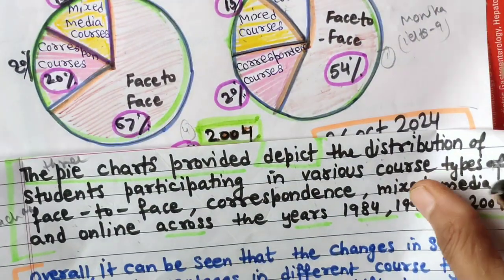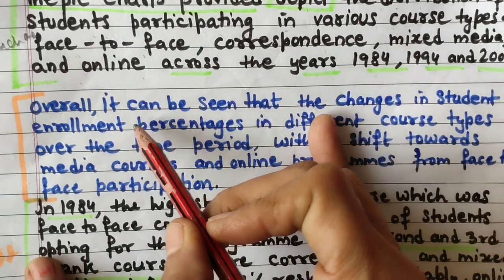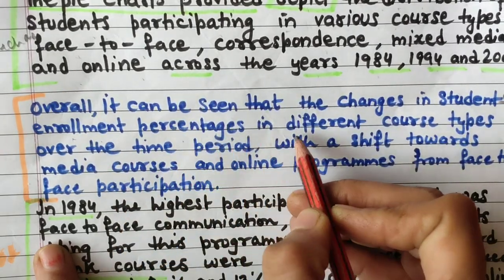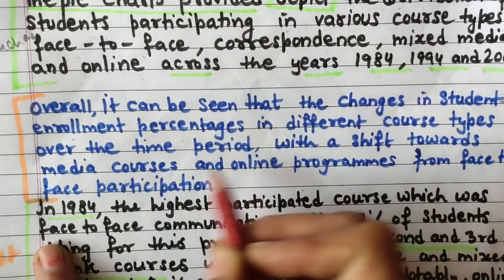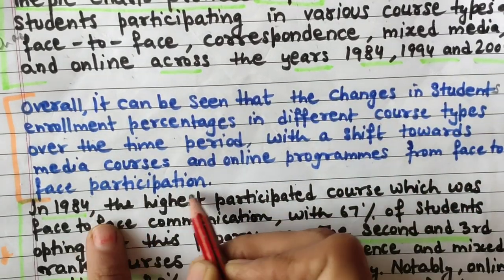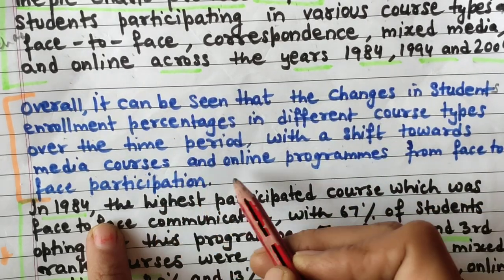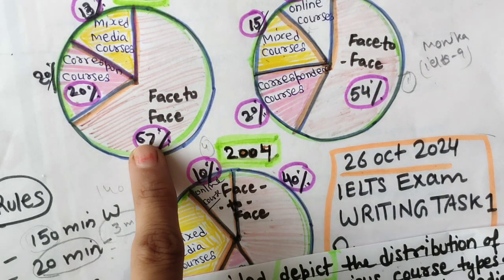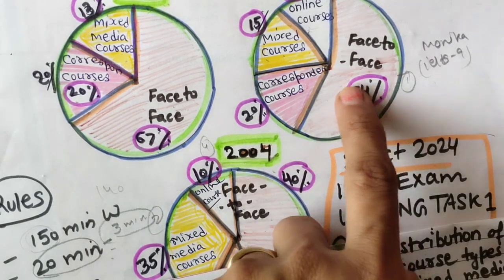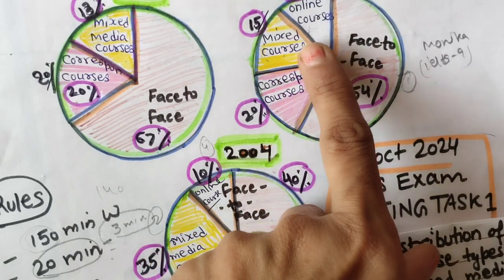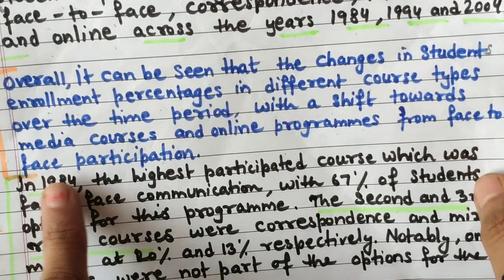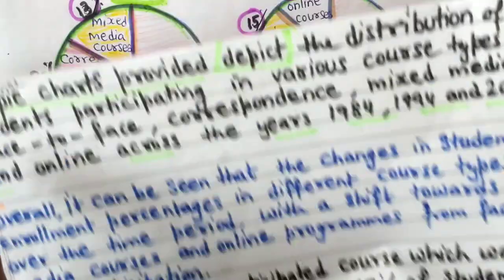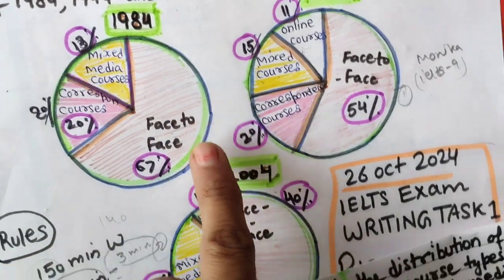For the overall paragraph, the most notable trend is that face-to-face was the most popular course. A sample overall statement: 'Overall, it can be seen that there were changes in student enrollment percentages in different course types over the time period, with a shift towards mixed media courses and online programs from face-to-face participation,' since face-to-face reduced from 67% while mixed and online courses gained share.